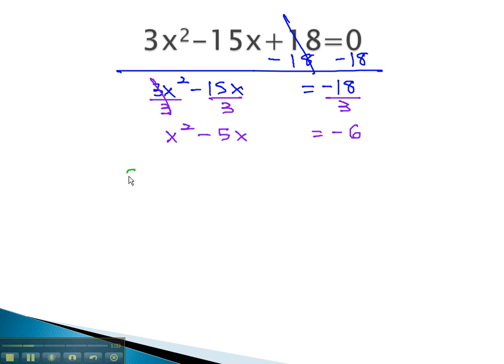Our next step is to find the c. c, we found out, was 1 half times b, or negative 5 squared. This gives us negative 5 halves squared, which is 25 over 4. We are going to add this, 25 over 4, to both sides of the equation.